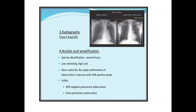Testing is also done with the help of chest X-ray. In case of tuberculosis, there will be calcification and it is seen on the chest X-ray. Nucleic acid amplification is also one of the newer tests used to diagnose tuberculosis, especially extrapulmonary tuberculosis. It is useful for the rapid confirmation of tuberculosis. An example of a nucleic acid amplification test is PCR.